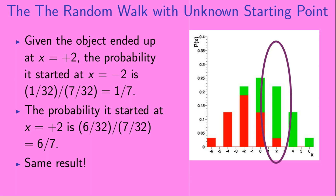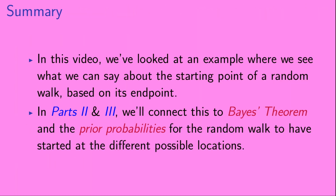In this video we've looked at an example where we see what we can say about the starting point of a random walk based on its end point. In Parts 2 and 3 we'll connect this to Bayes Theorem and the prior probabilities for the random walk to have started at the different possible locations.